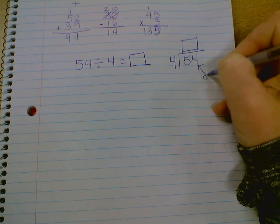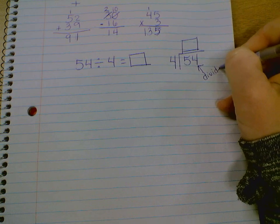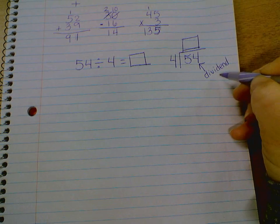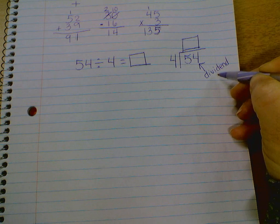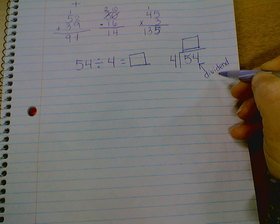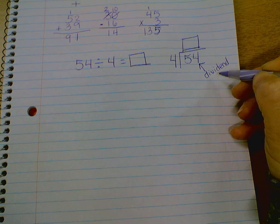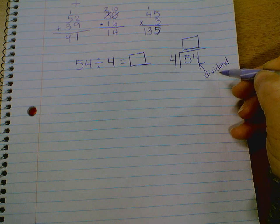54, the total amount, is the dividend. So say it with me at home, dividend, say it with me, dividend, perfect. Now, say it with a southern accent, dividend, or say it with an English accent, dividend.